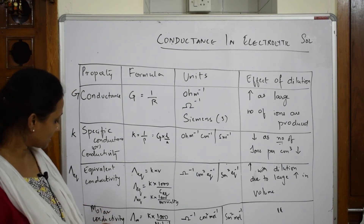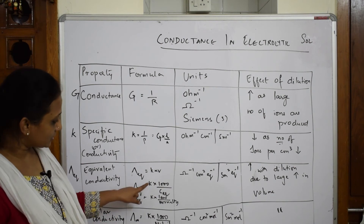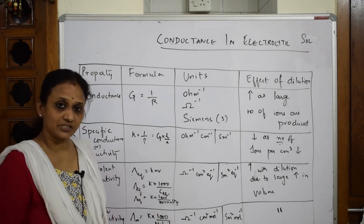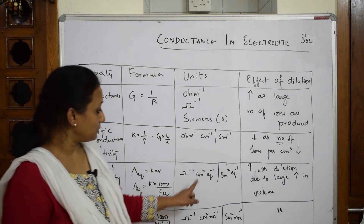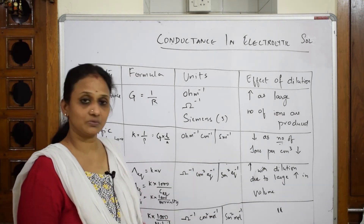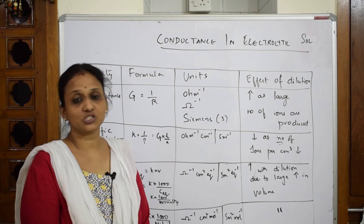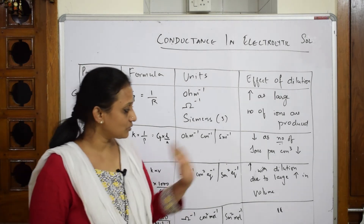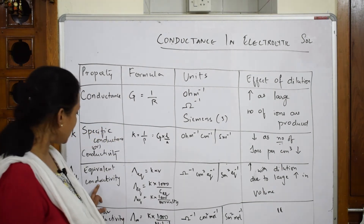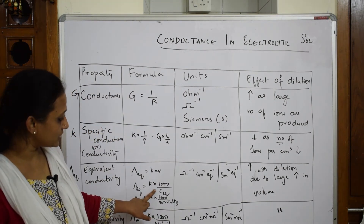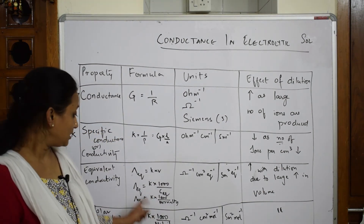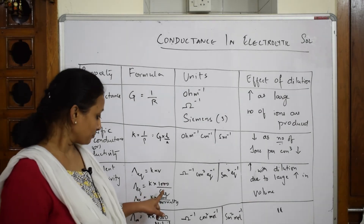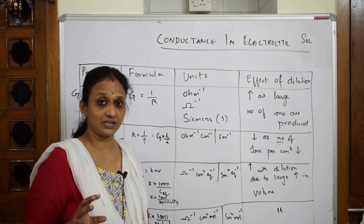For equivalent conductance and molar conductivity, I've given the formula in an earlier video — please check the units there; it should be centimeter square, so correct that if needed. Now regarding the effect of dilution on equivalent conductance: it equals conductance multiplied by the number of gram equivalent weights, i.e., normality.